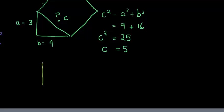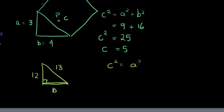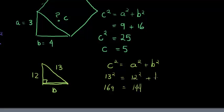Let's take another one. This time we notice that it's one of the legs — one of the right angle sides — that's been left out. Let's call it B that was left out. We have C squared is equal to A squared plus B squared. We know that C squared is 13 squared, that's 169, is equal to A squared, which is 12 squared, which equals 144, plus B squared. If we solve for B, we find that B squared is equal to 25, so B is equal to 5.